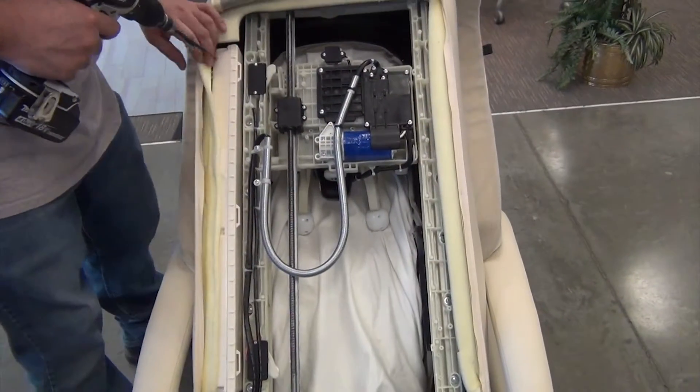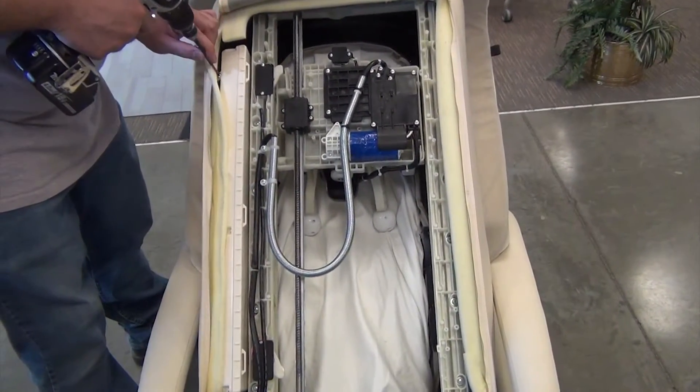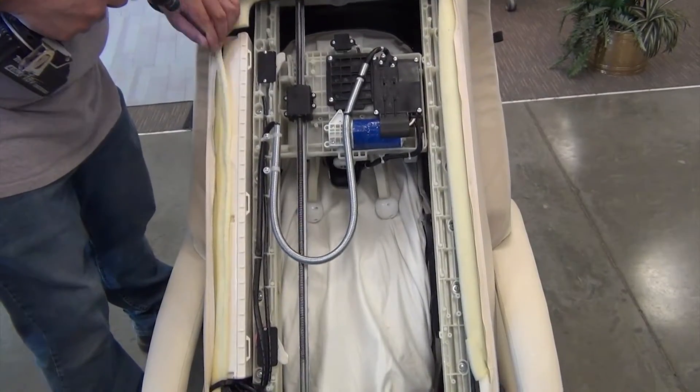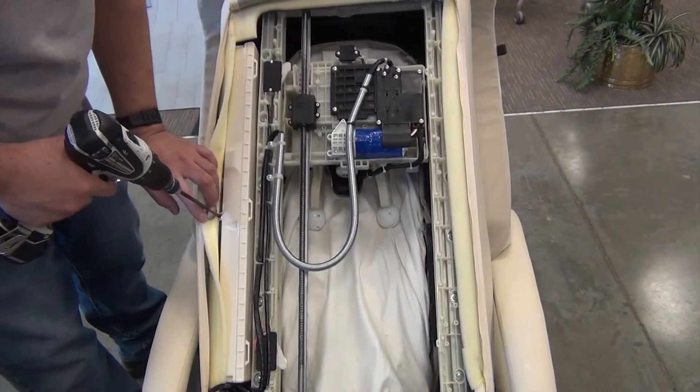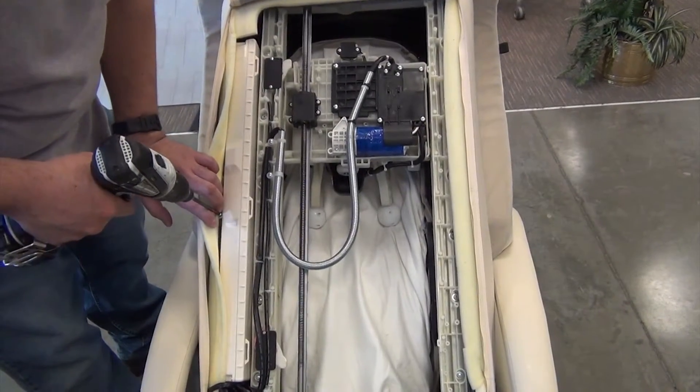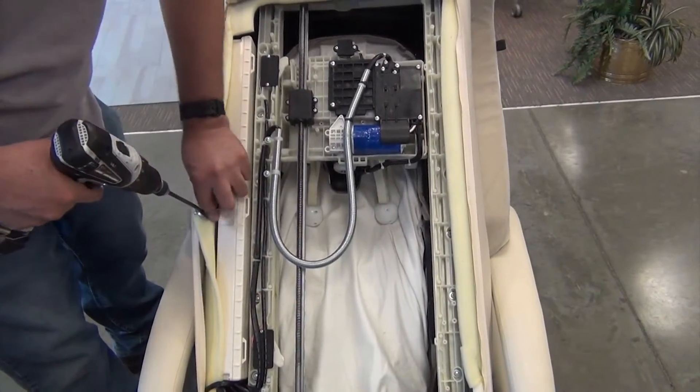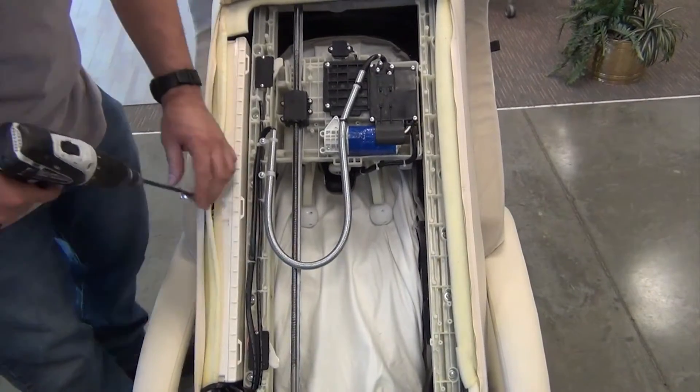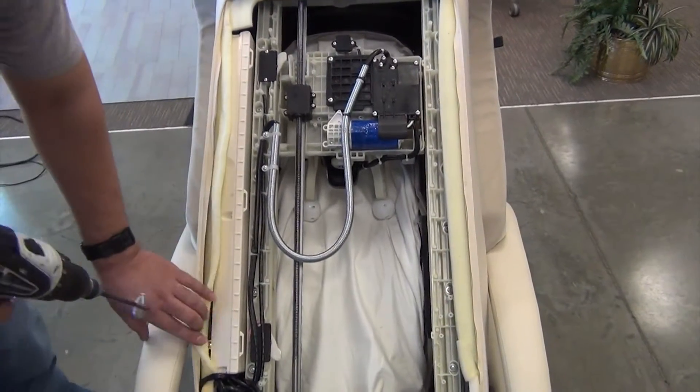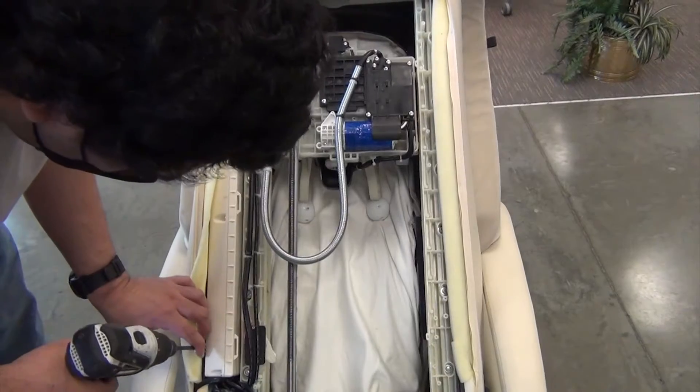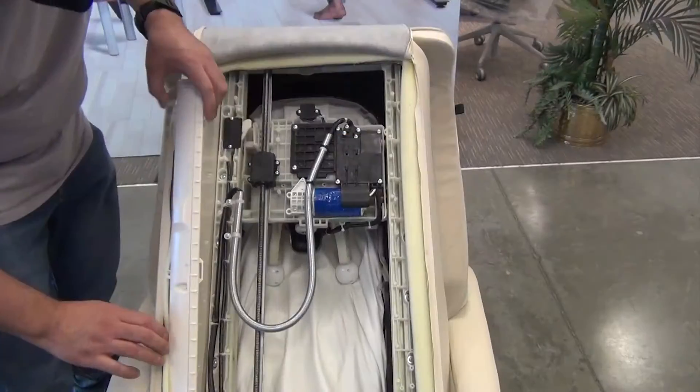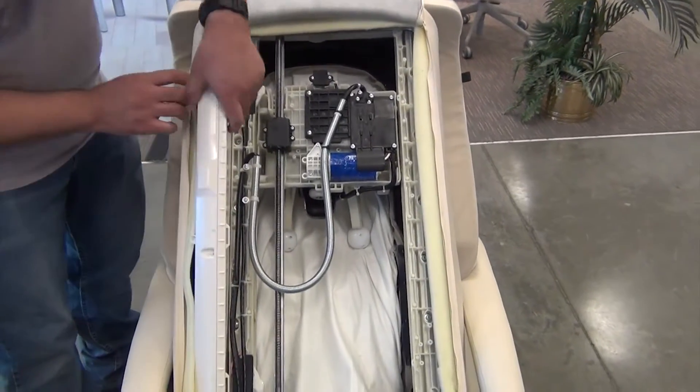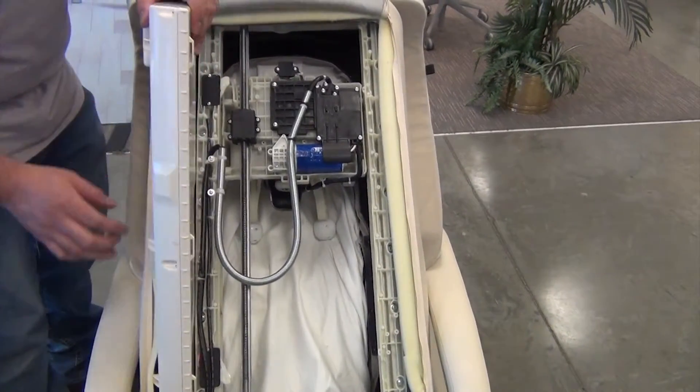Remove the three screws that secure the PCB box to the chair frame. Then, lift the PCB box out of the backrest and set it on top of the backrest with the screws facing up.